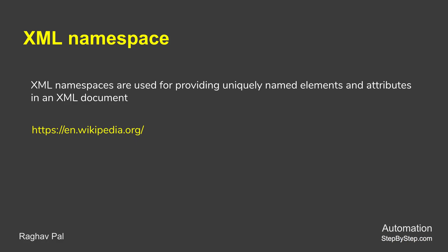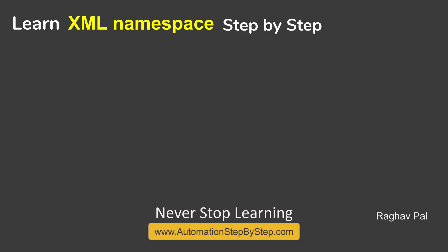Wikipedia says that XML namespaces are used for providing uniquely named elements and attributes in an XML document, and I hope now you understand this. We have learned this in a very simple way. I hope all this was useful — go and share your knowledge with everyone, let me know how you liked this video, and I will meet you in the next session. Thank you for watching.